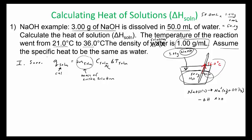The C of solution, they said assume it to be the same as for water. So this will be 4.184 joules per gram times Celsius. And then delta T, it went from 21 to 36. So delta T would be 15.0 degrees Celsius.